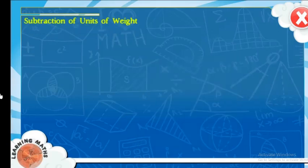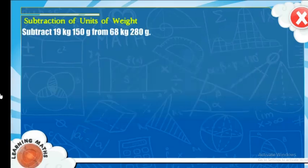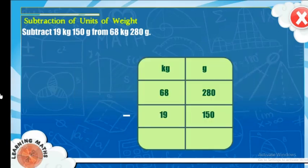Subtraction of Units of Weight: To subtract units of weight, first subtract the grams, then subtract the kilograms. Subtract 19 kilograms, 150 grams from 68 kilograms, 280 grams. Step 1: Arrange the numbers in the proper columns. Step 2: Subtract the grams. Step 3: Subtract the kilograms. So, the answer is 49 kilogram, 130 grams.